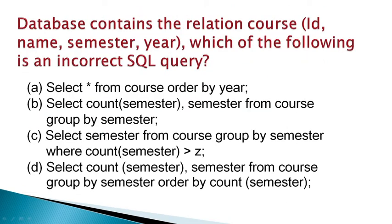Now the second question. The database contains a relation called 'course'. The course table has columns: id, name, semester, and year. Which of the following SQL queries is incorrect? We are given the course table with these four columns and need to identify the incorrect SQL query.